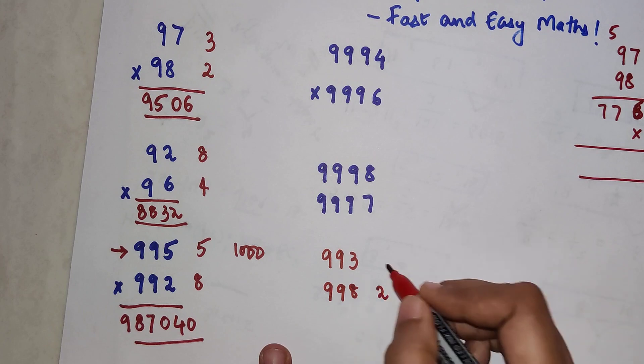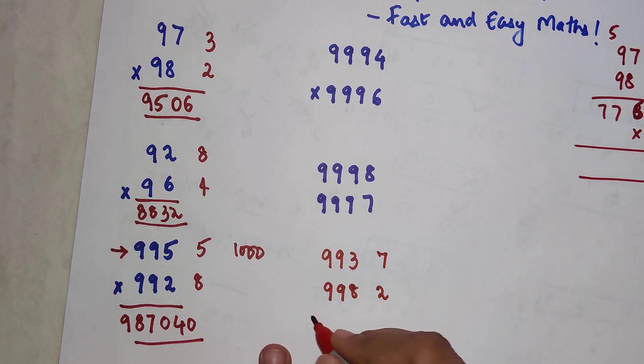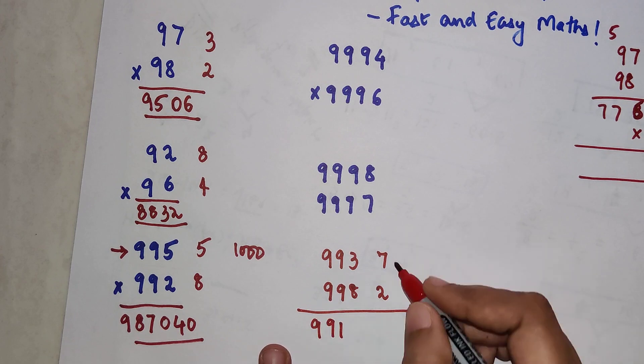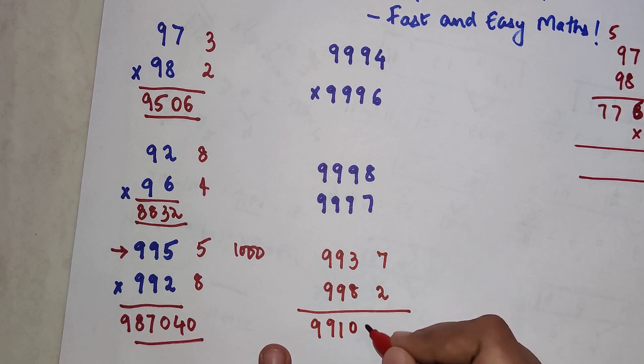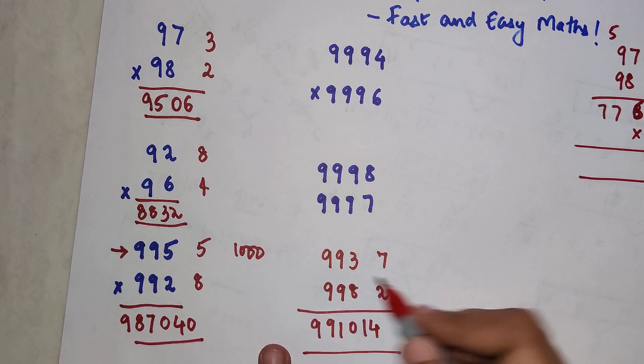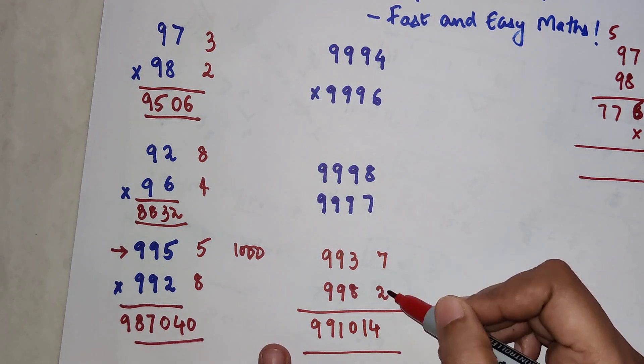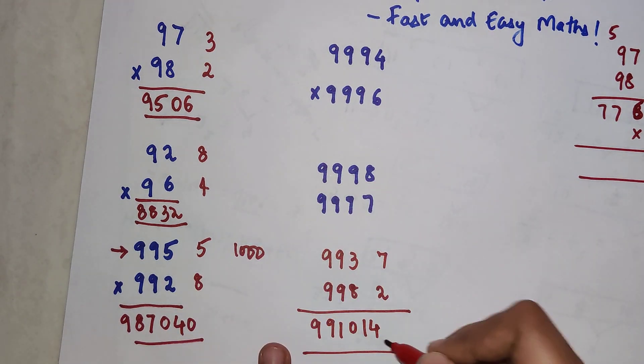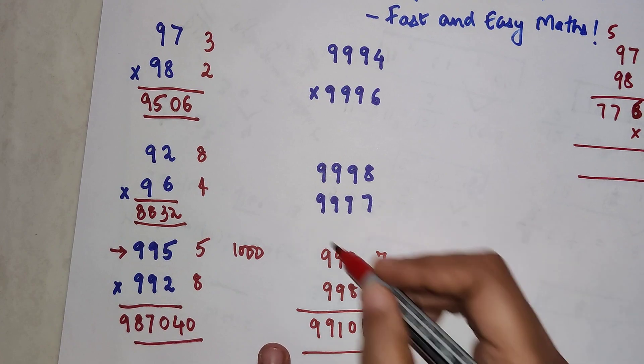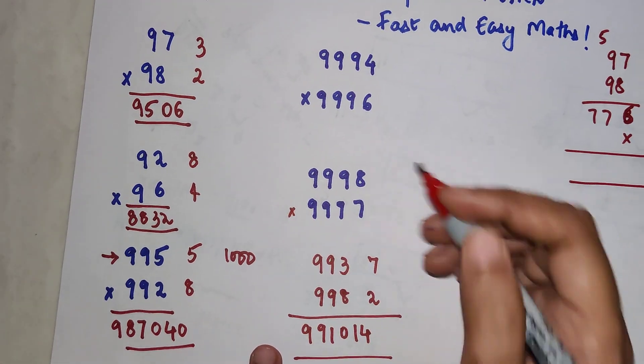Here the difference is 2, here the difference is 7. So when you subtract you get 991, and your final answer will be 014. Why? Because you need the last part of your answer to have three digits. Since 7 into 2 was getting you just 14, we wrote it as 014.